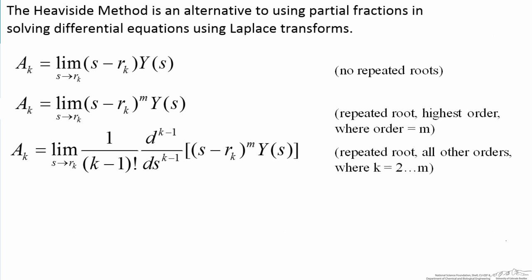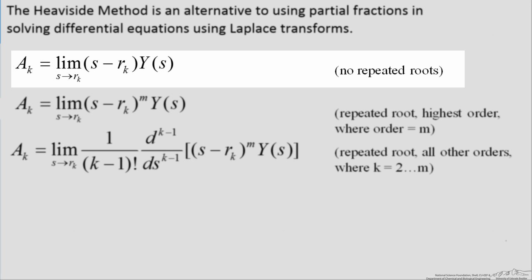Shown on the screen are the three equations that are used for the Heaviside method. There are three possibilities. First, the root that you have is not repeated, so it is by itself. In that case you use the first equation, where r represents the value of the root. R is present both as of the limit, shown here, and is present in the first term.